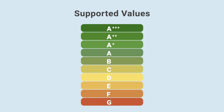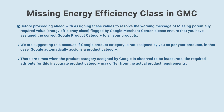Before proceeding ahead with assigning these values to resolve the warning message of missing potentially required value energy efficiency class flagged by Google Merchant Center, please ensure that you have assigned the correct Google Product Category to all your products. We are suggesting this because if Google Product Category is not assigned by you as per your products, Google automatically assigns a product category.